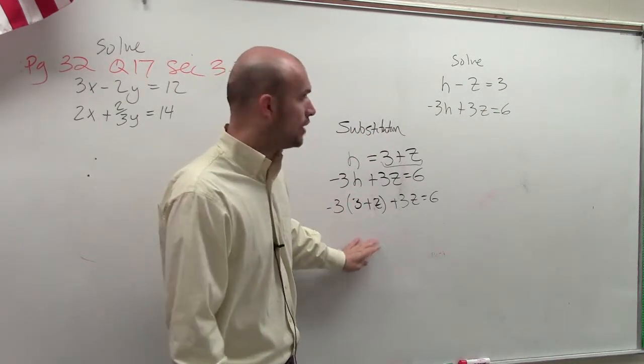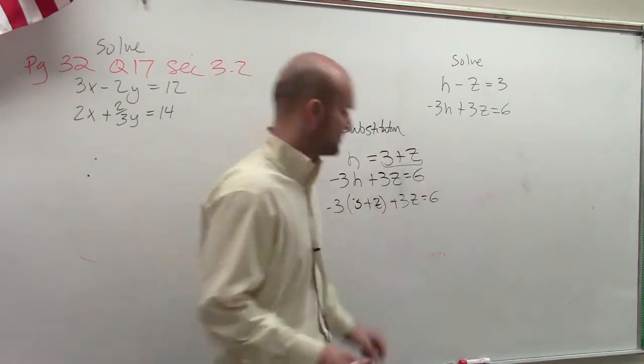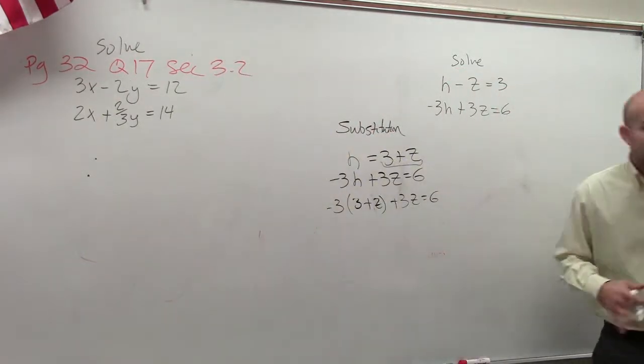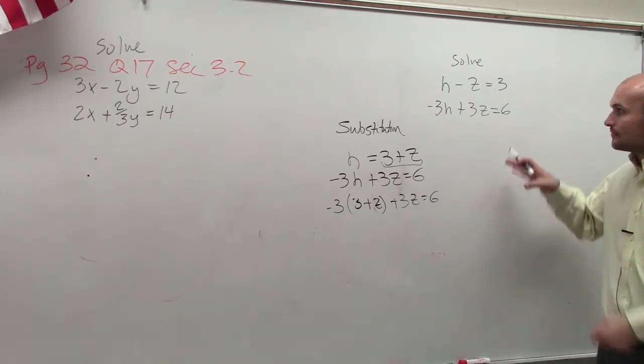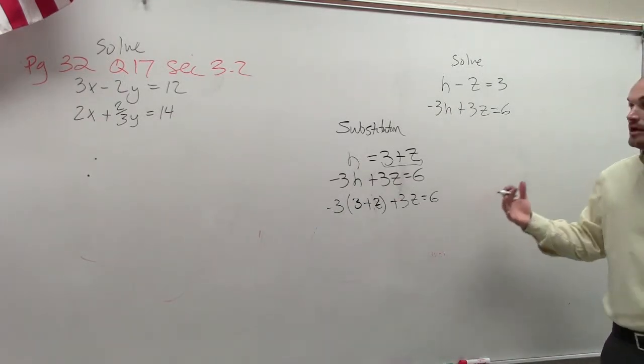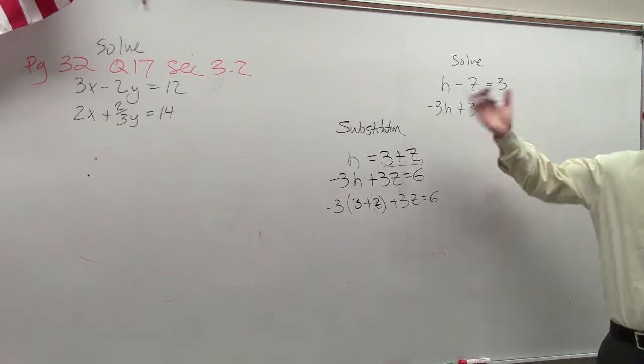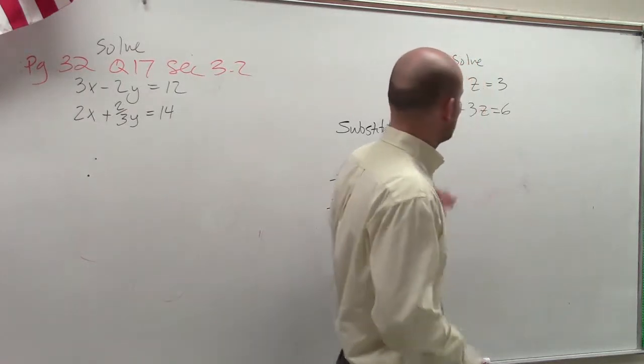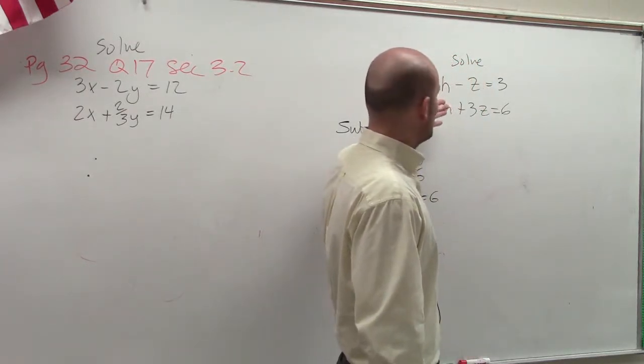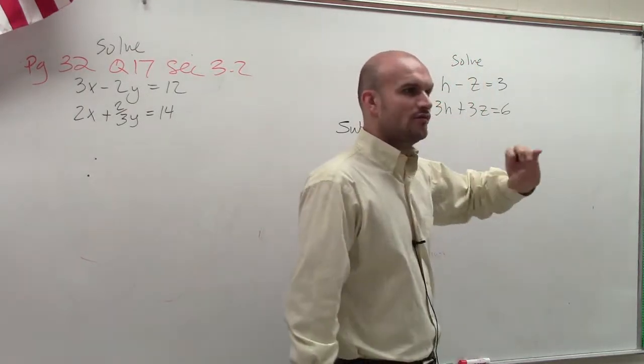Now, before I go and solve, I want to go and do the elimination part so you guys can see. Elimination, remember, is talking about adding and subtracting your two equations. So when doing elimination, what we're going to want to do is add and subtract them. But when adding and subtracting, we just don't want to add and subtract the equations as is if they do not produce a zero coefficient.